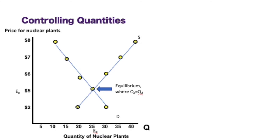Here on the vertical axis, we see the price for nuclear power plants. On the horizontal axis, we see the quantity of nuclear power plants.